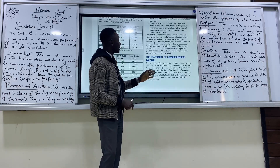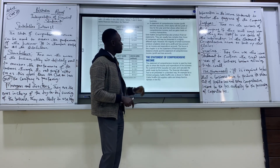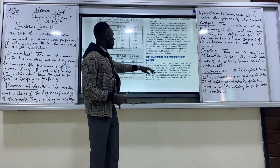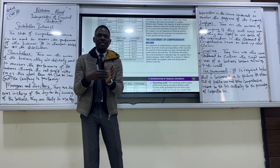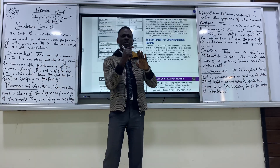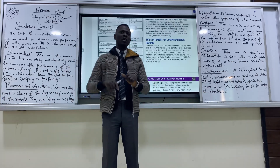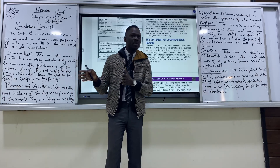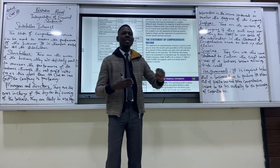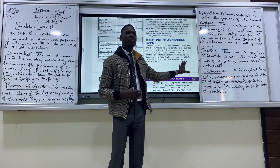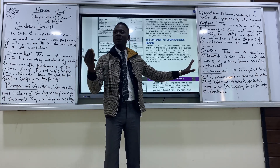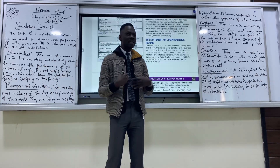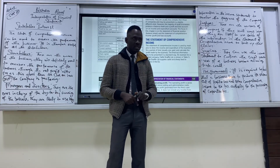For sole traders and partnerships, they also produce financial statements, but they are usually less complex than those of companies and presented in a slightly different style. The majority of small businesses produce a balance sheet and a profit or loss account, which is the same as income statements. Every business needs to provide a statement of profit or loss, but for sole traders and partnerships they do not have to present it to the government, because they don't pay corporation tax — they pay income tax. Sole traders and partnerships pay the same tax as individuals, while companies pay corporation tax.